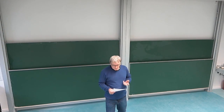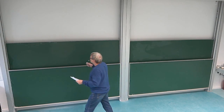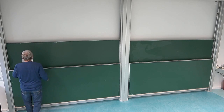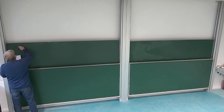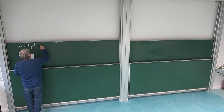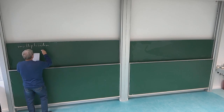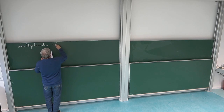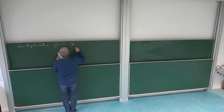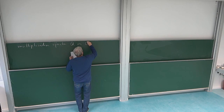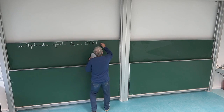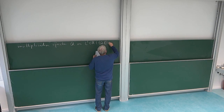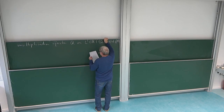Let us look at the multiplication operator as our canonical example in infinite dimensions. We take it on L² of ℝ, denote it by Q. The operator Q applied to a function F at the point t is just t times F(t) — it multiplies with the argument.